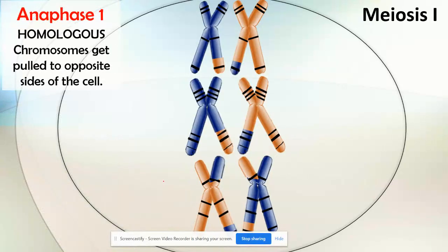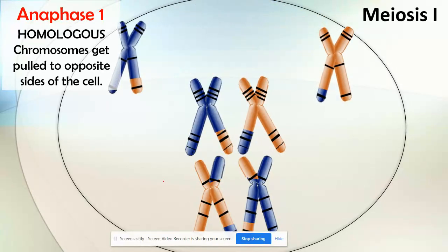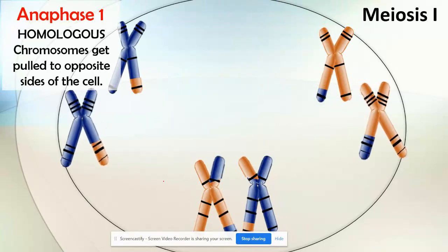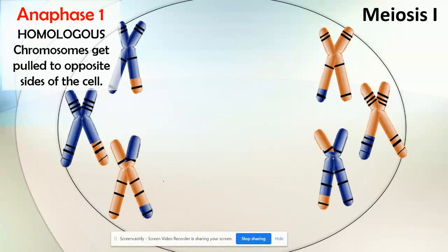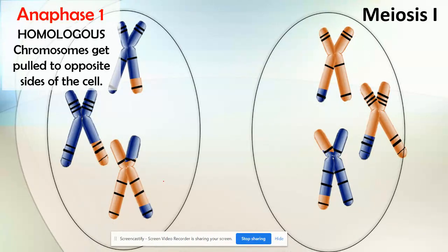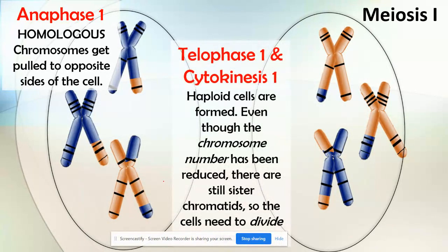Once we have the homologous chromosomes in pairs, we go through anaphase I, where the homologous pairs actually get separated to opposite sides of the cell — this does not happen in mitosis, since in mitosis there are no pairs. Then we move into telophase I and cytokinesis. At the end of meiosis I, we end up with two cells.